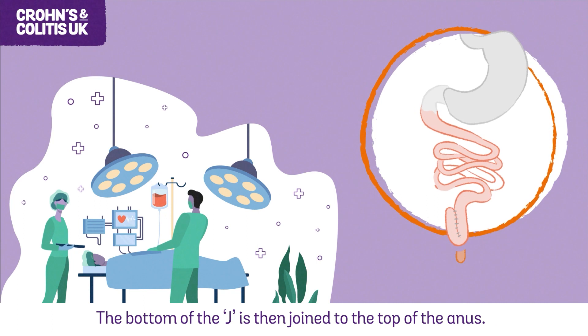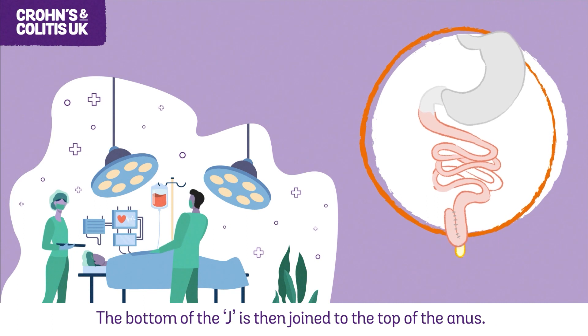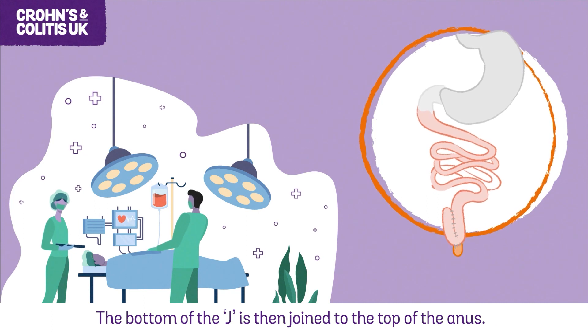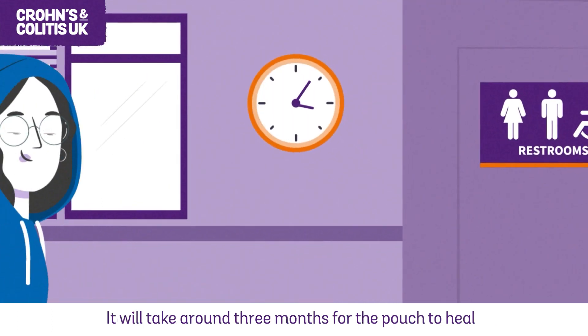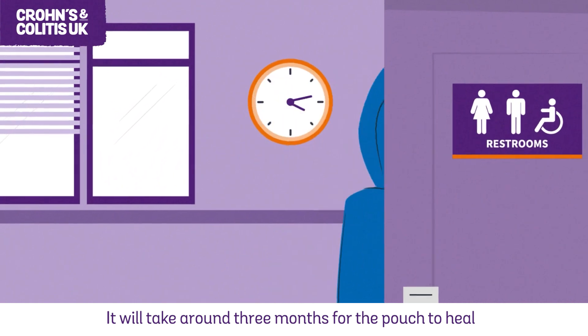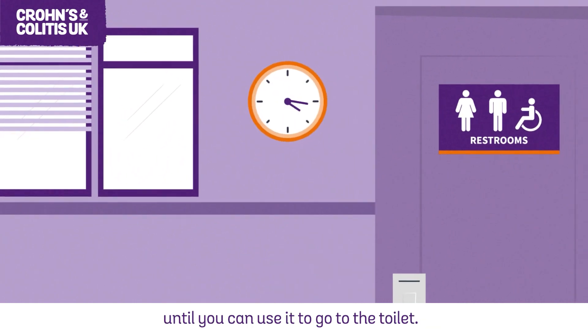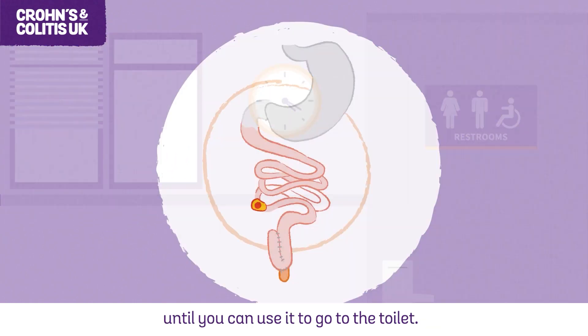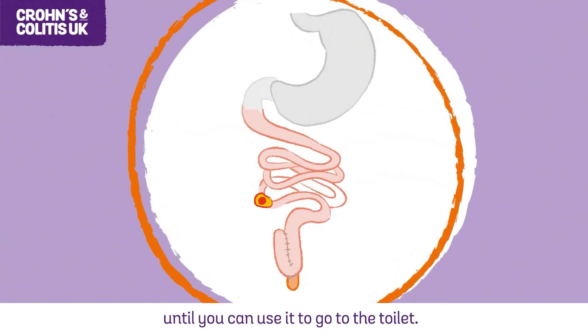The bottom of the J is then joined to the top of the anus. It will take around three months for the pouch to heal until you can use it to go to the toilet.